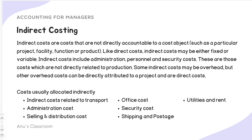Before learning about activity based costing, we need to know two important types of costing: direct and indirect costing. Indirect costs are those costs which are not directly accountable to a cost object — such as a project, a facility, a building, security, shipping, postage, utility, rent, or administration costs. Like direct costs, indirect costs may also be fixed or variable.